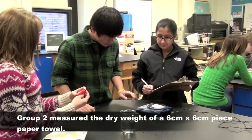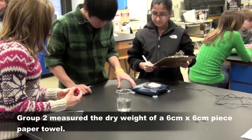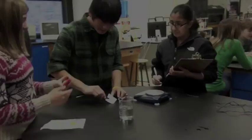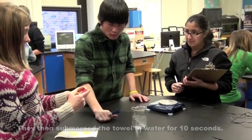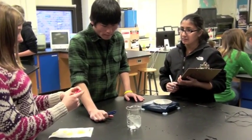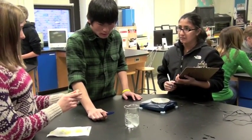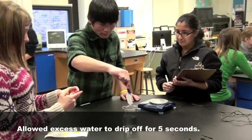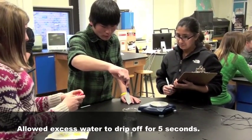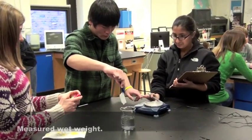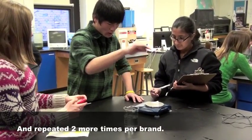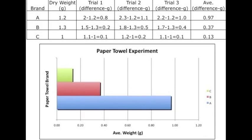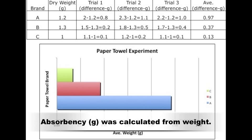Group 2 measured the dry weight of a 6 cm x 6 cm piece of paper towel. They then submerged the towel in water for 10 seconds, allowed excess water to drip off for 5 seconds, measured wet weight, and repeated two more times per brand. Absorbency in grams was calculated from weight.